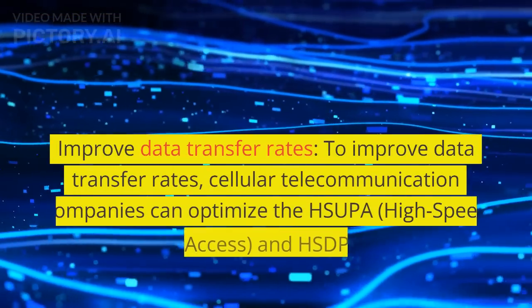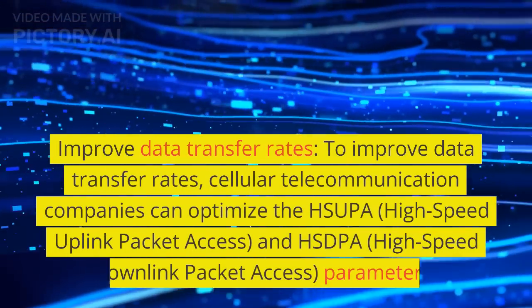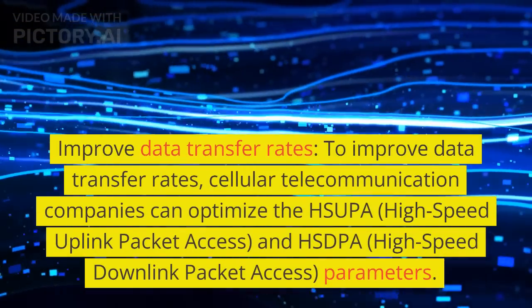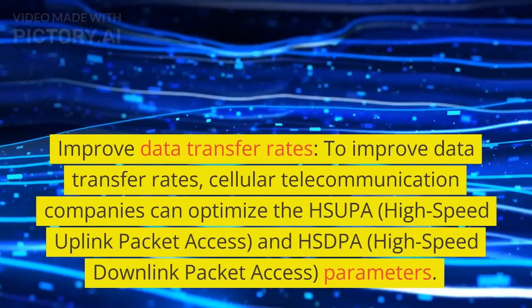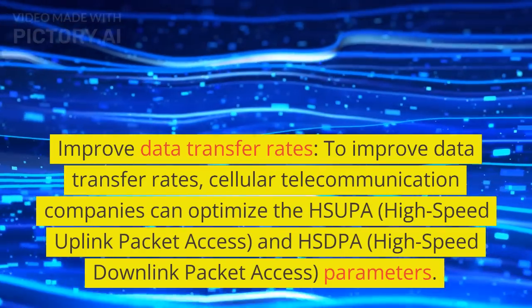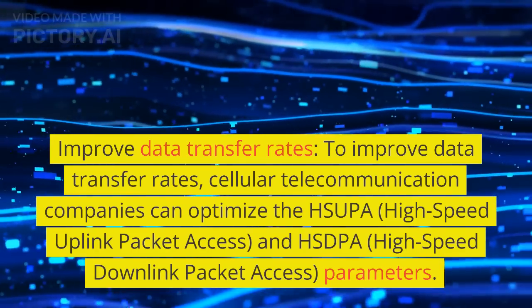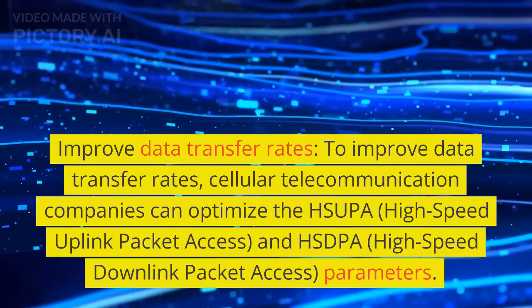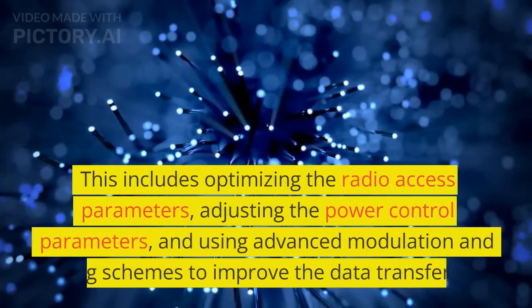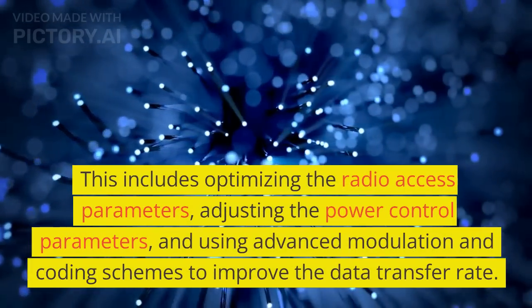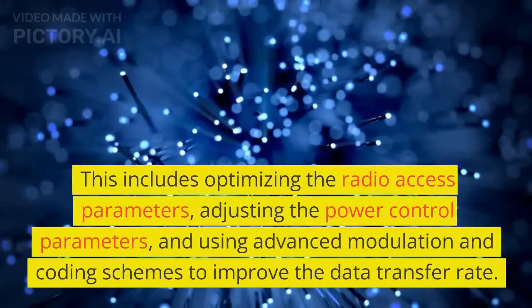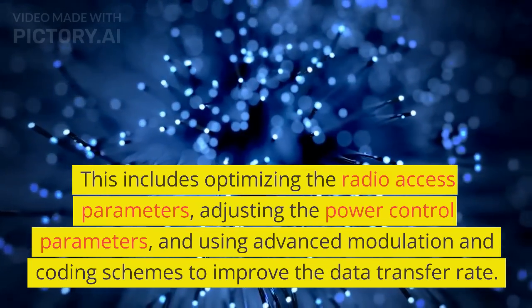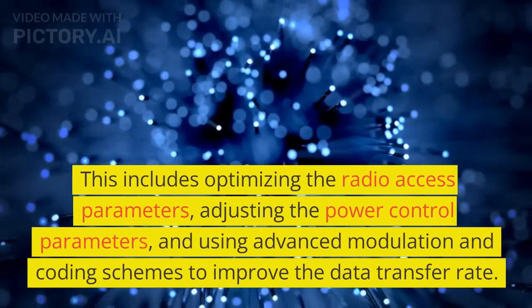Improve Data Transfer Rates: To improve data transfer rates, cellular telecommunication companies can optimize HSUPA, high-speed uplink packet access, and HSDPA, high-speed downlink packet access, parameters. This includes optimizing the radio access parameters, adjusting the power control parameters, and using advanced modulation and coding schemes to improve the data transfer rate.